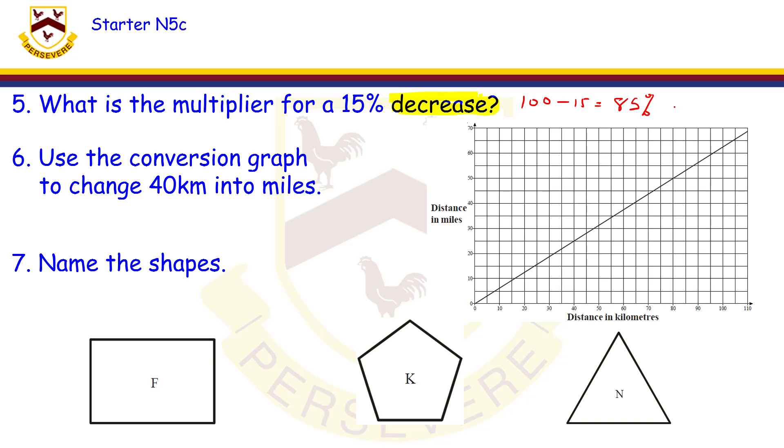Question number six, use the conversion to change 40 kilometers into miles. That's my miles here and that's my kilometers. 40 kilometers, so I'm going to take it up till it hits the line and then take it across. That gives me 25 miles. So we can see 40 kilometers is equal to 25 miles.